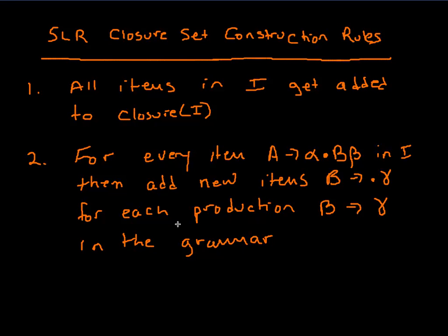Then we have the second rule, which looks a little weird. Basically, we're going to find every item in I that has the pattern where A produces alpha dot B beta. For every item that matches this pattern, we're going to add new items — B produces dot gamma — for each production B produces gamma in the original grammar.